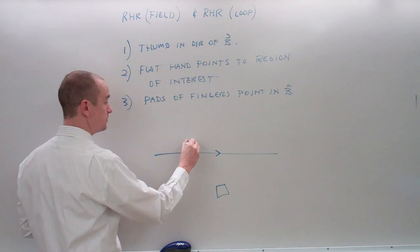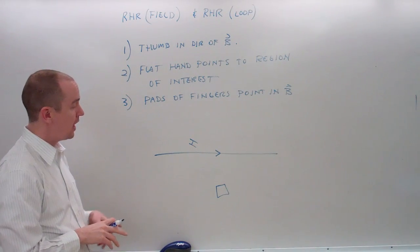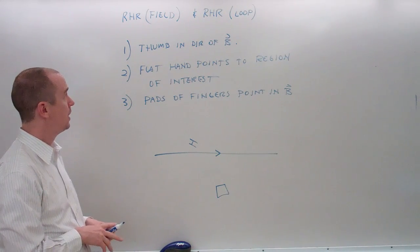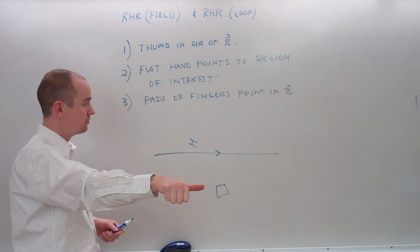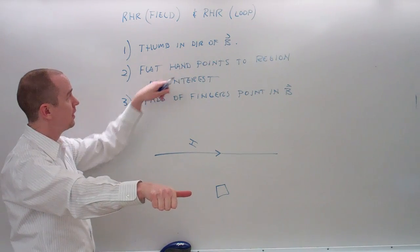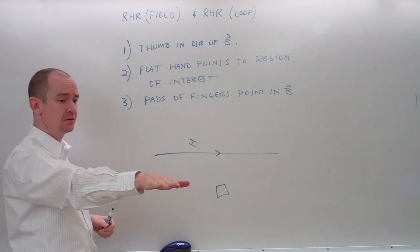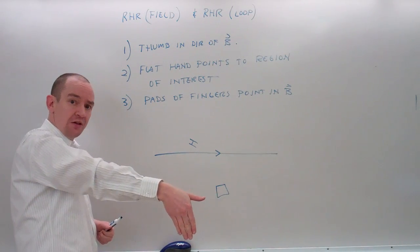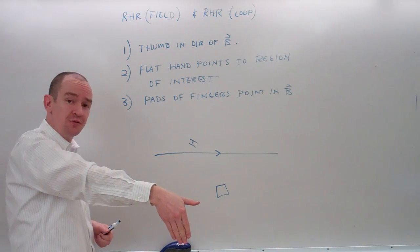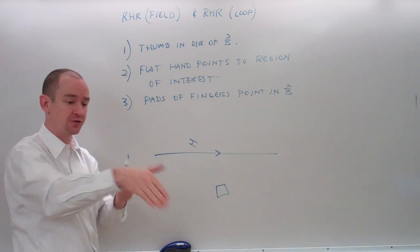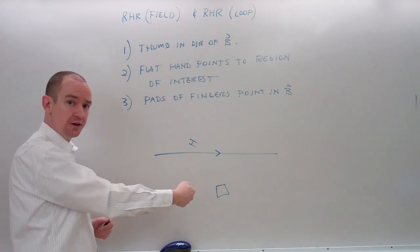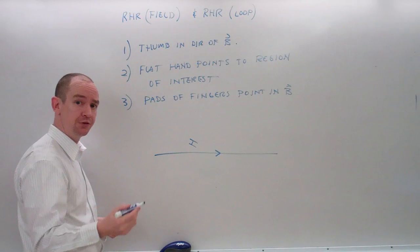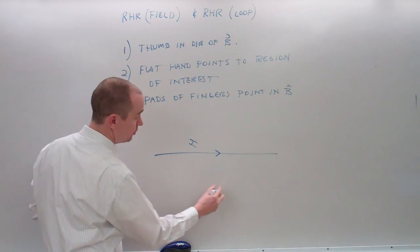Imagine I have a current-carrying wire pointing in that direction, and I would like to know the direction of the magnetic field at a specific location. My thumb points in the direction of current. I use a flat hand and point my fingers into the region of interest — down there. The pads of my fingers are pointing into the board, so the magnetic field at this location should be into the board. Into the board is shown using an X.